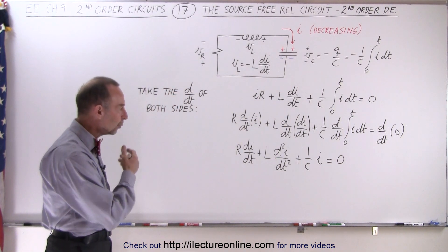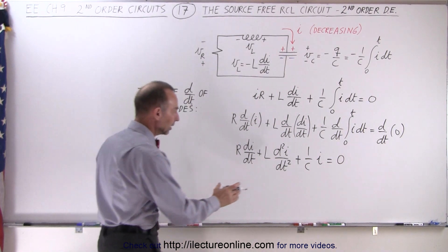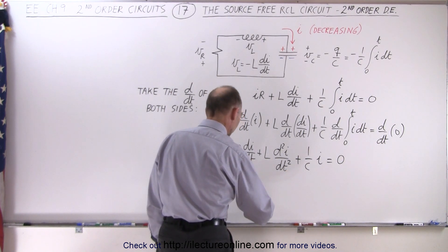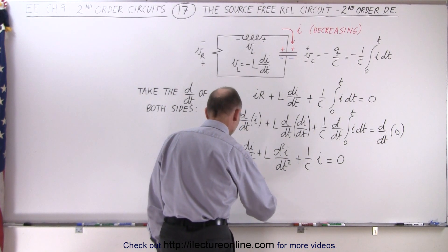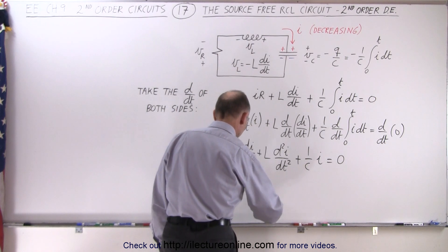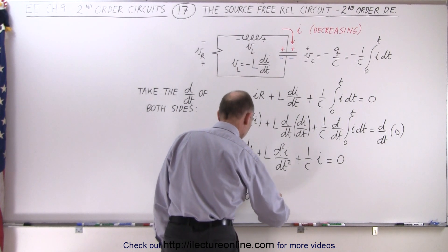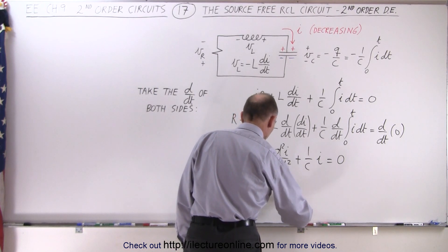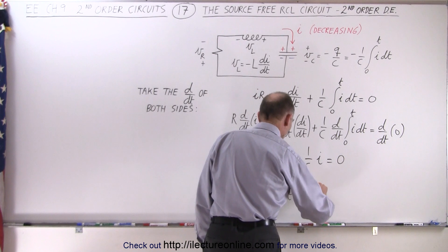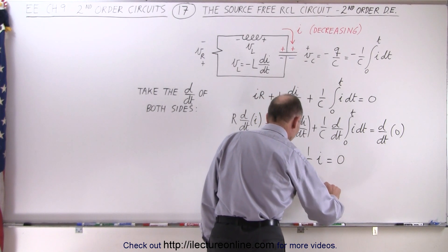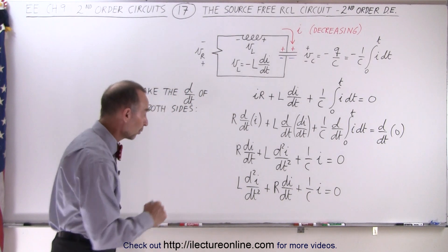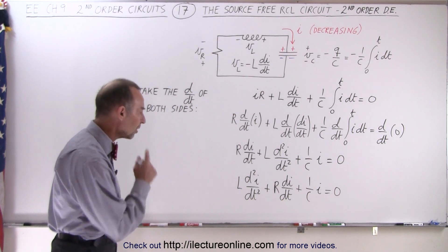Now we need to rearrange the equation, putting the second derivative first. So we end up with L times the second derivative of I with respect to time, plus R times the first derivative with respect to time, plus 1 over C times I equals zero. And now it's beginning to look like a second order differential equation.